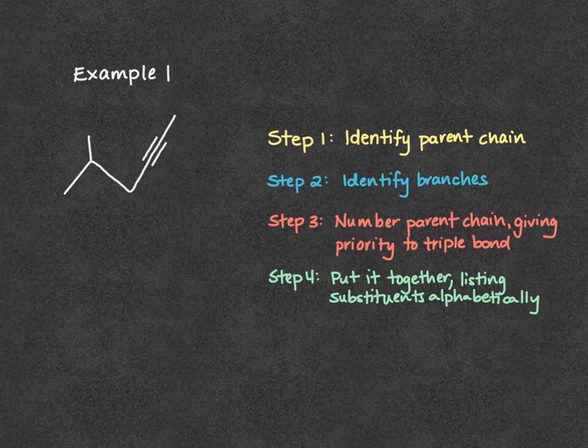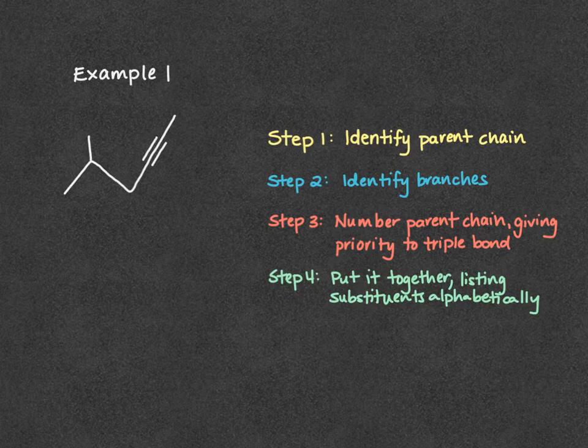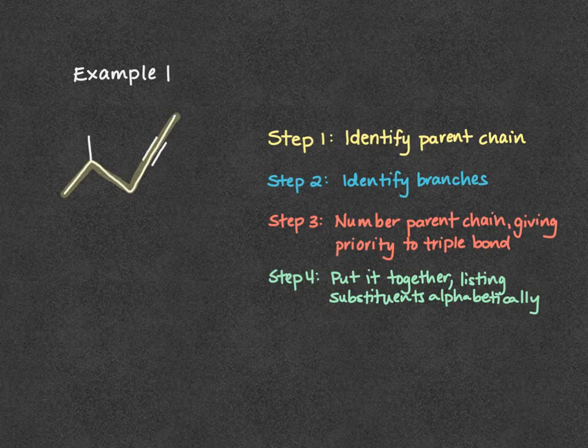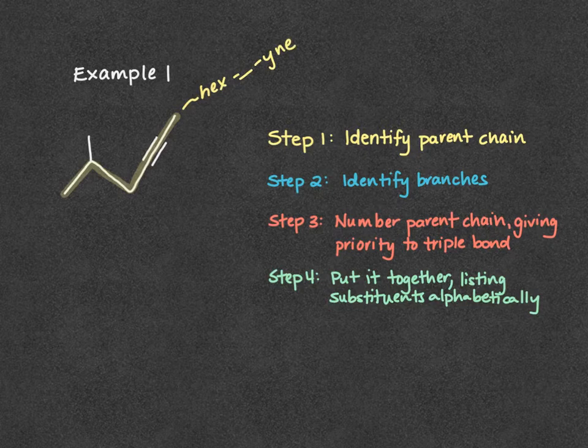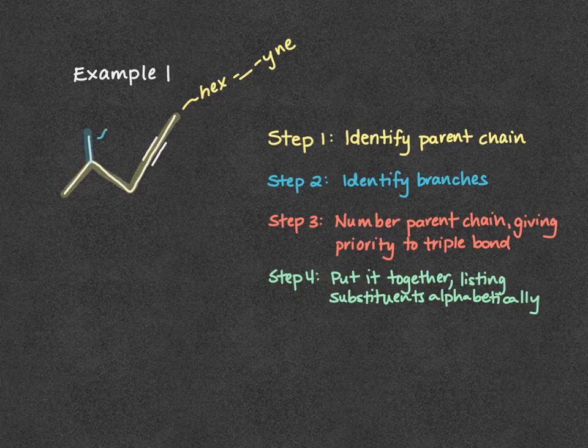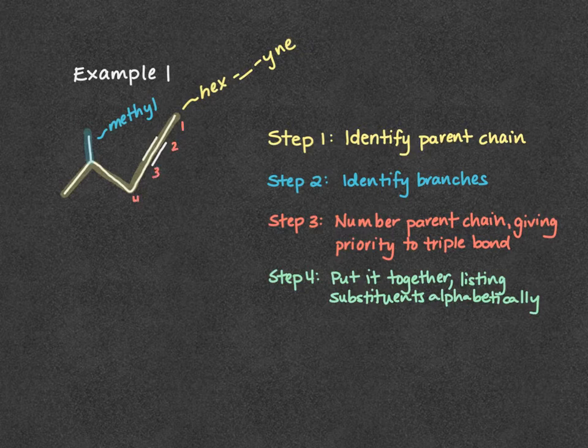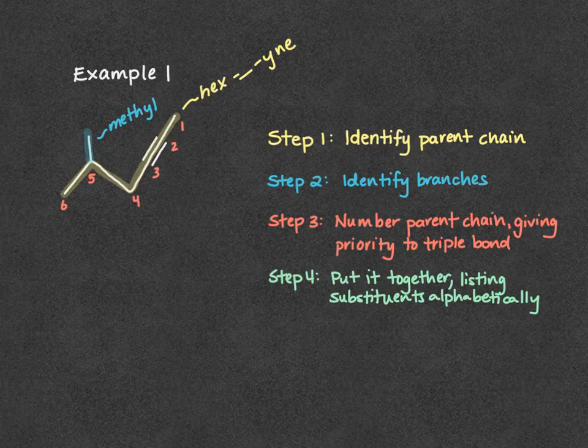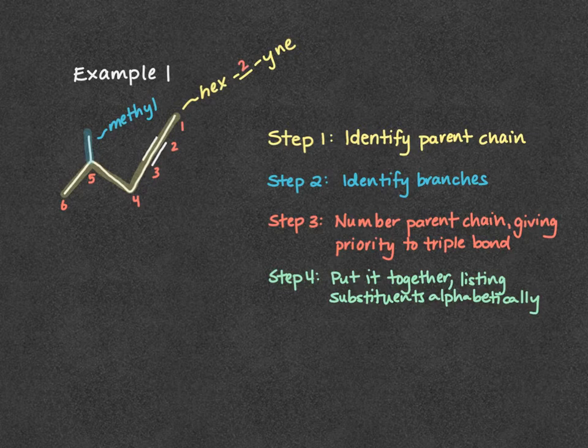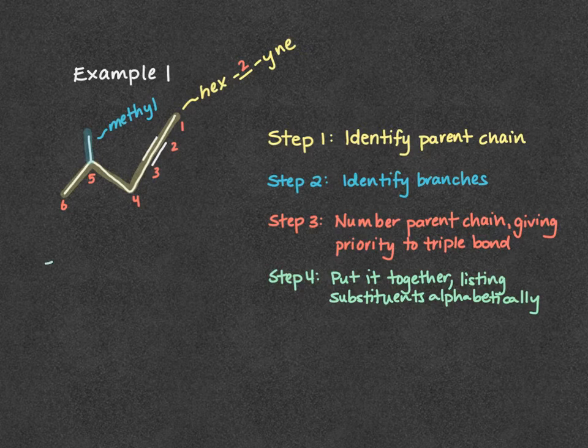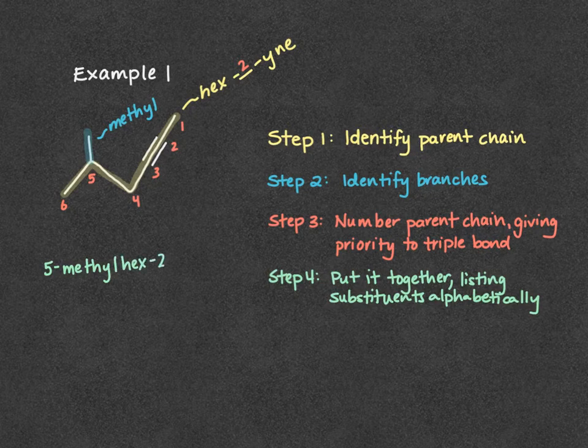Our last step is to put it all together, listing our substituents alphabetically. I'm going to go through again our four steps. We first identify our parent chain, and in this case our parent chain was hexyne. Next, we identify any branches, and here we had a methyl. Next, we're going to number our chain, and we said we were going to go from right to left, so that our hexyne was going to be the number 2, and our methyl is number 5. Putting it together, listing our substituents alphabetically - we only have the one substituent, so no need to worry about the alphabet - we have 5-methylhex-2-yne.